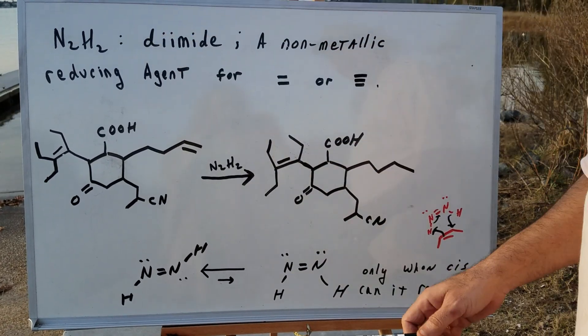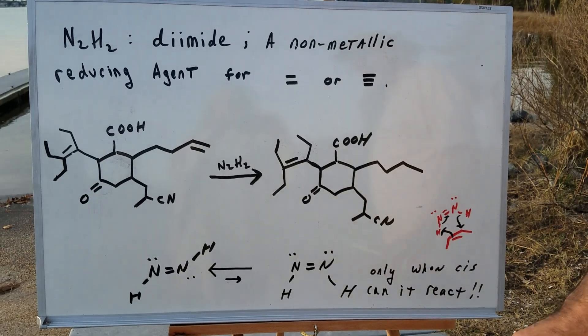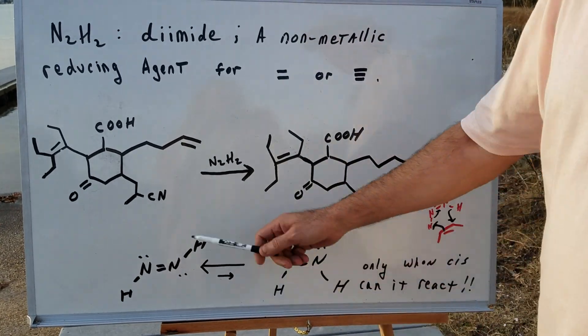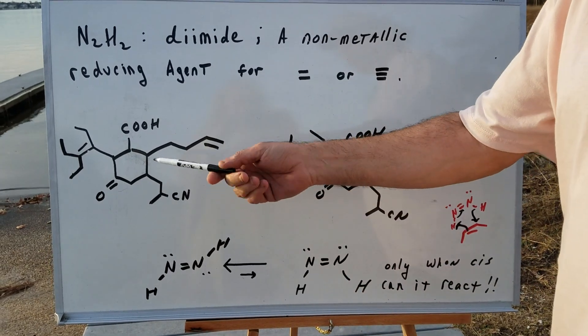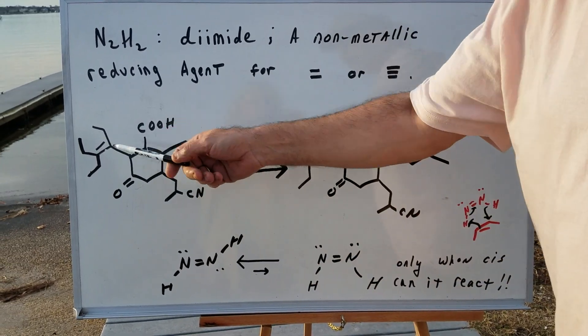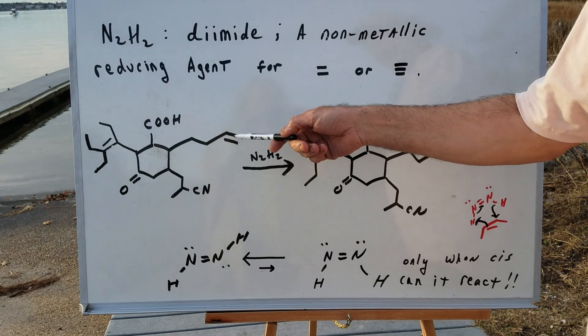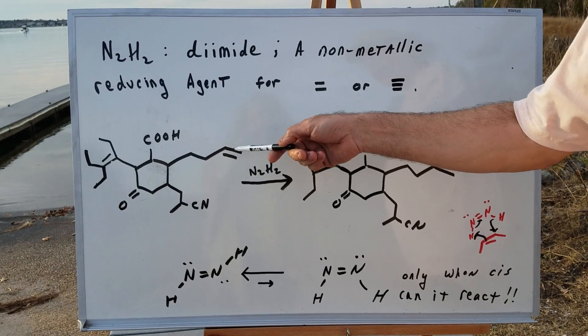However, diimide is going to do something that you're probably going to be a little surprised when you see it. If we take a look at a molecule here, and just for practice, we identify some functional groups. Here we have an alkene.